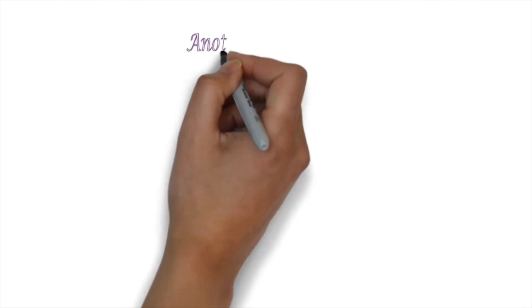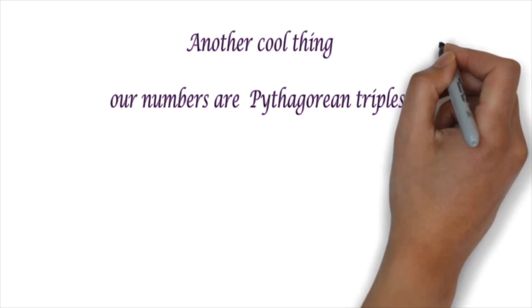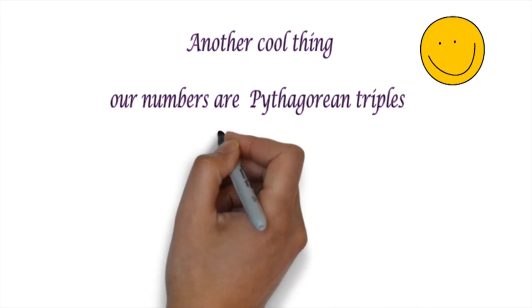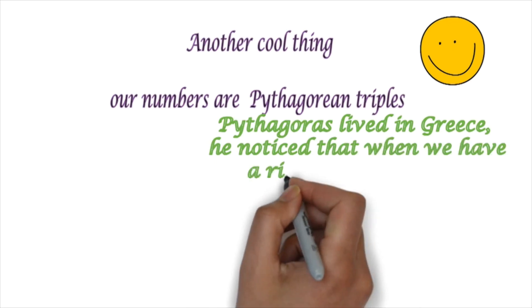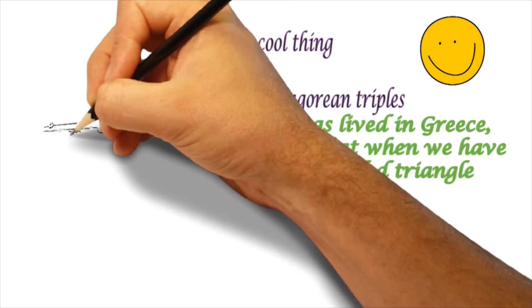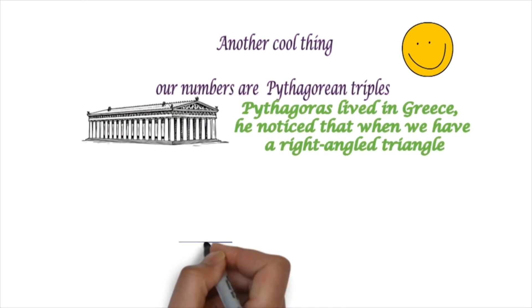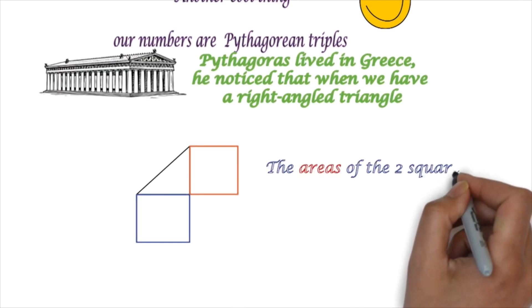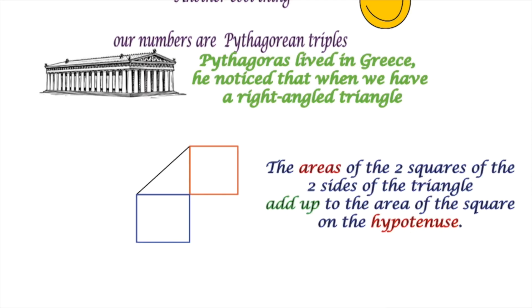Another cool thing, our numbers that we chose for you are Pythagorean triples. Pythagoras lived in Greece, and he noticed something really amazing, that when we have a right-angled triangle, here's a picture from Greece. The areas of the two squares on the two sides of the triangle add up to the area of the square on the hypotenuse.